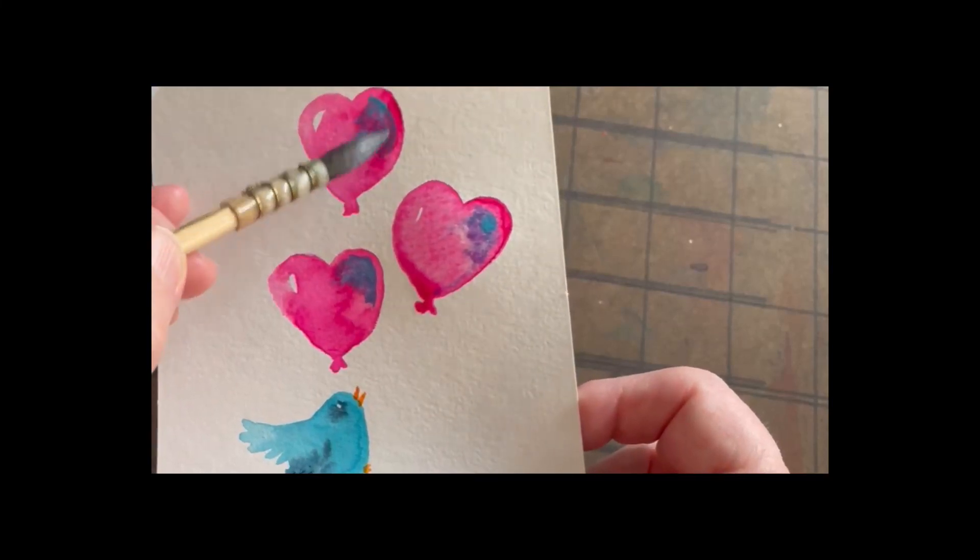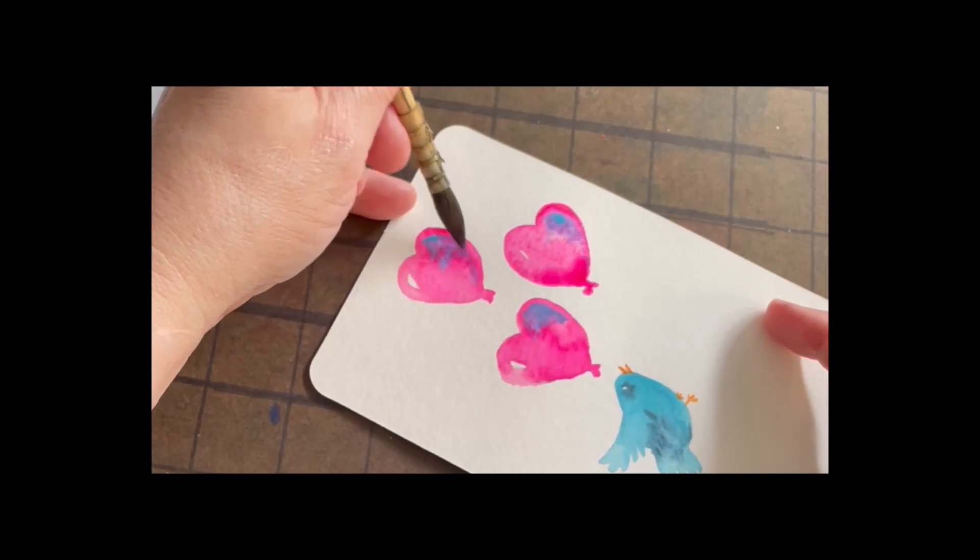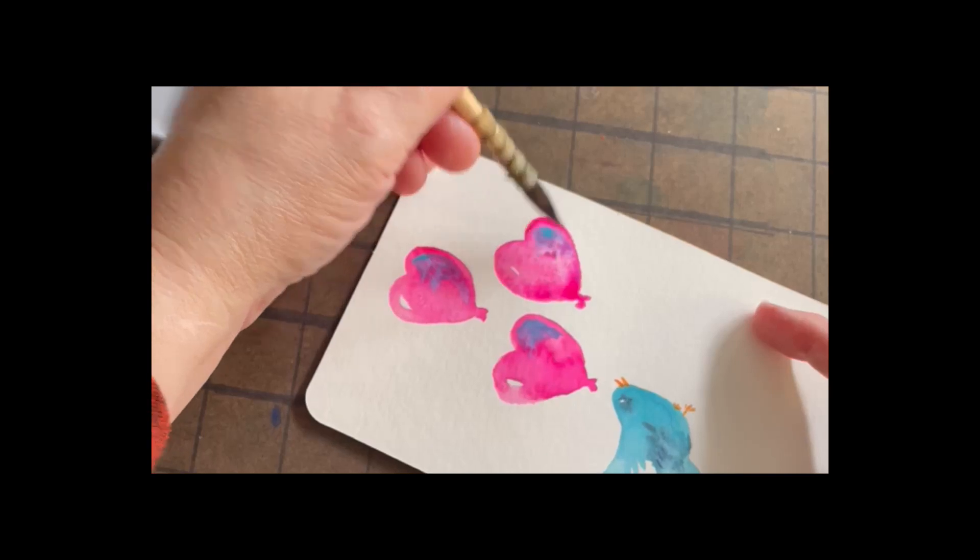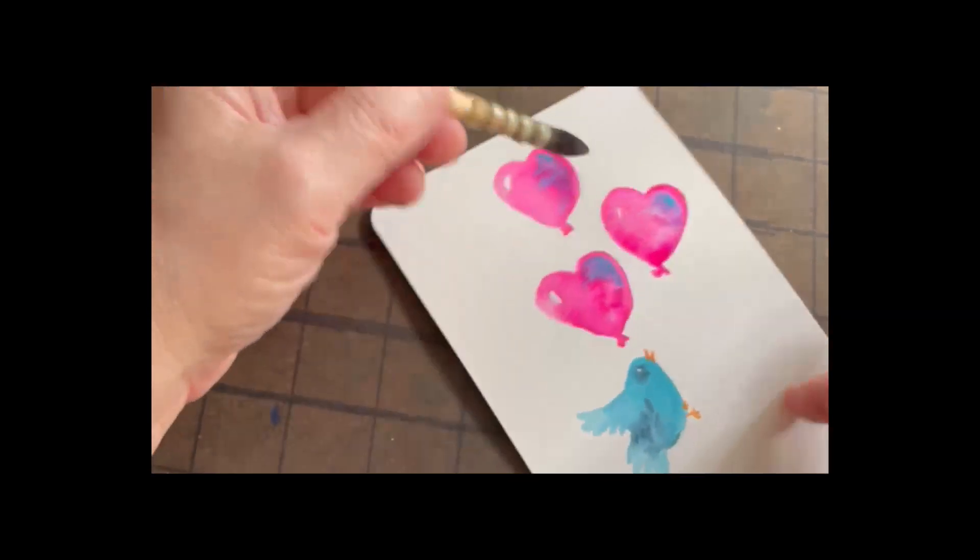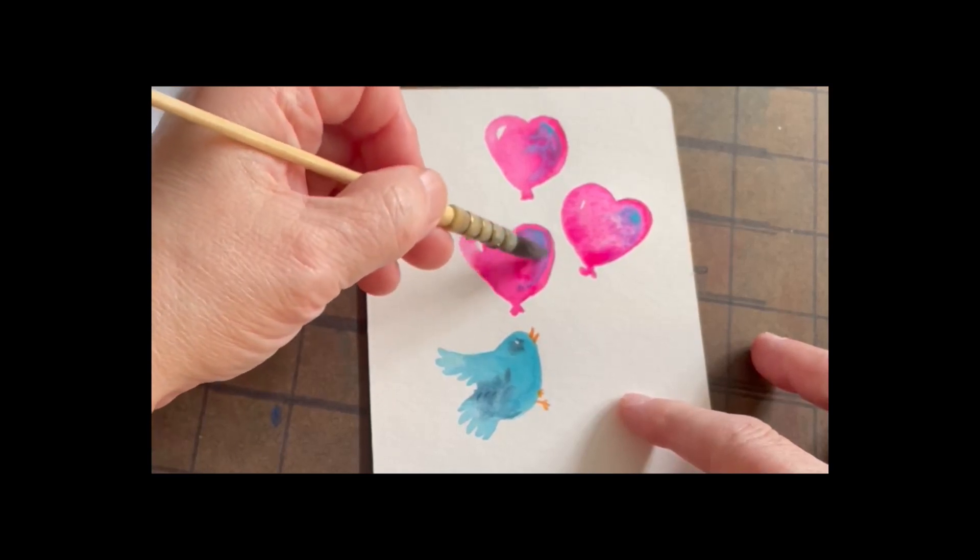Now I'm just using water on my brush and blending the pink and blue a little bit. And in the process, I'm also lifting a little bit of color, and this will give it that sort of mylar, shimmery sort of effect.